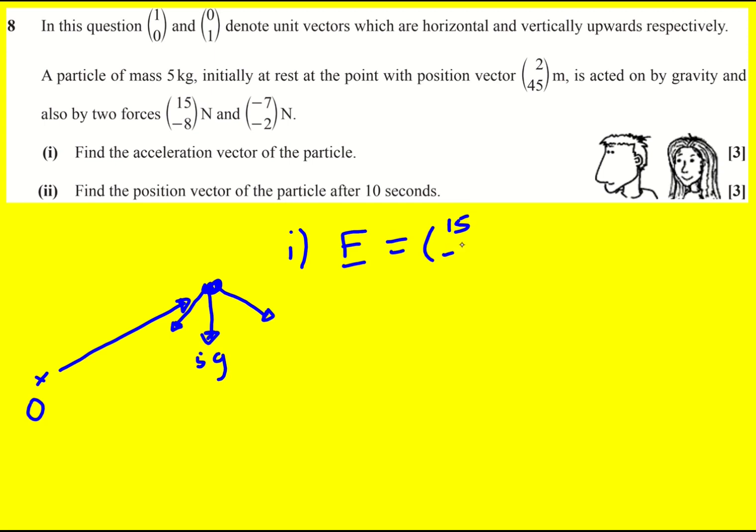We can add these two forces together as well as the weight. The weight has zero component in the x direction and it's going to be -5g in the y direction because it's acting down.